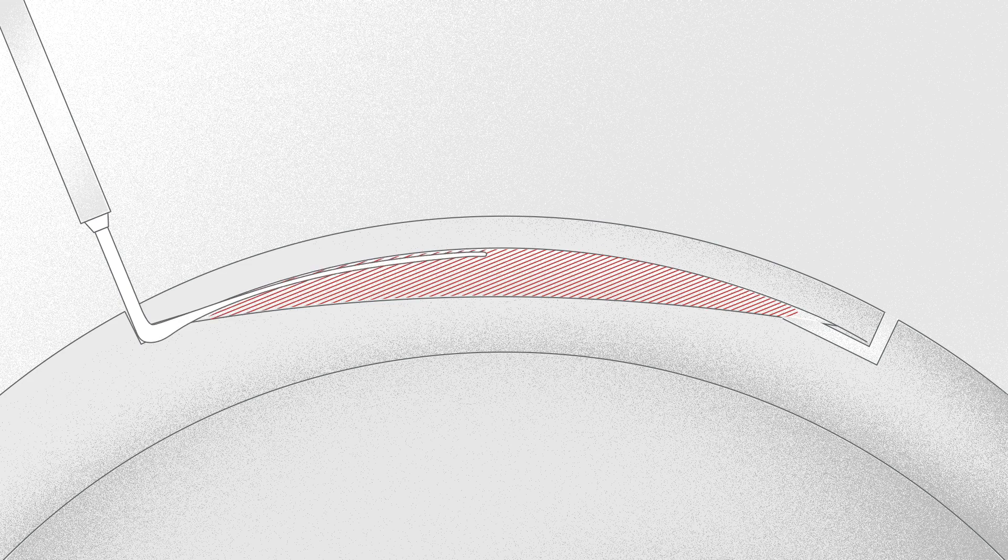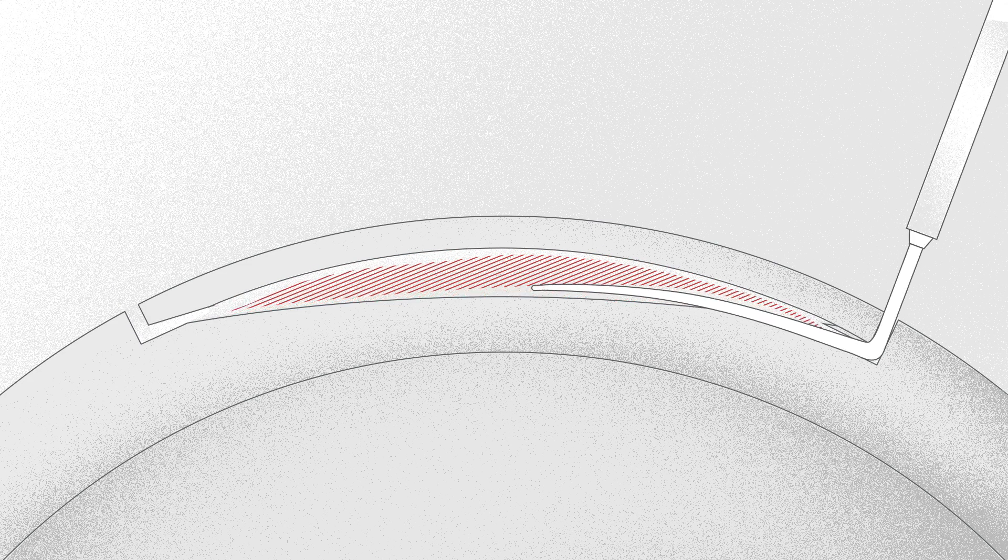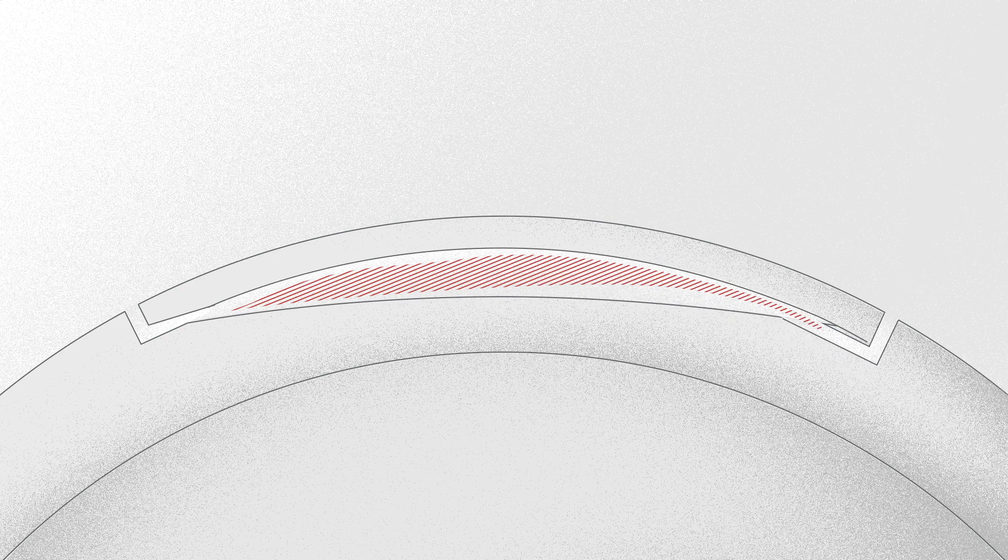Next, the surgeon inserts a dissector and carefully separates the lenticule interfaces in the anterior and posterior plane. After the dissection, the lenticule is extracted.